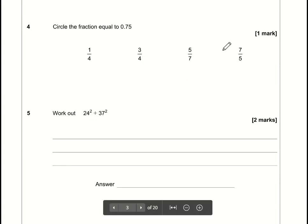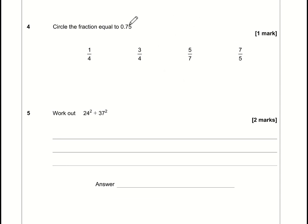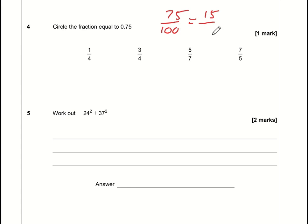Circle the fraction equal to 0.75. With a two-digit decimal we are talking about hundredths, so 0.75 is 75 over 100. That's not an answer option, but we can divide top and bottom by five: 75 ÷ 5 = 15, 100 ÷ 5 = 20. Dividing again by five: top gives 3, bottom gives 4. So the answer is three over four — or hopefully you just knew that 0.75 is three quarters.